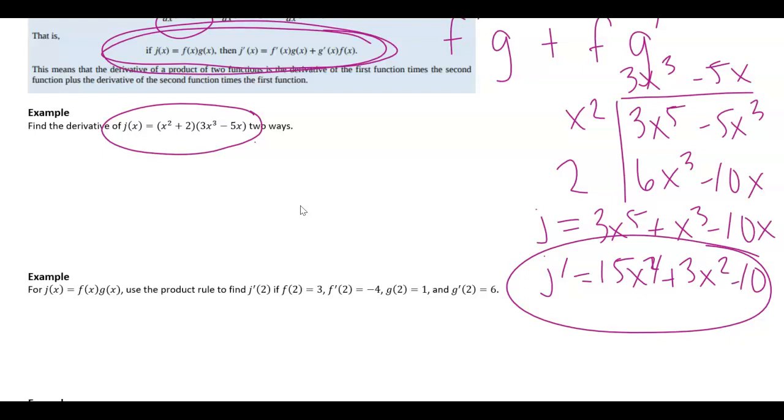But I want to show you how to do this using product rule because this is a product of two functions. So this is my f and this is my g. And so I can say j prime is equal to f prime, so 2x times g.